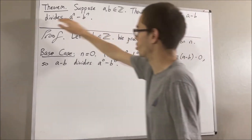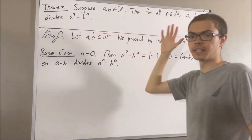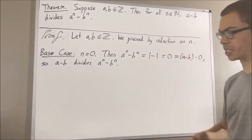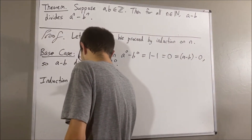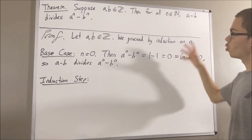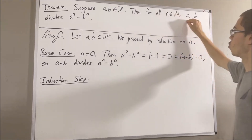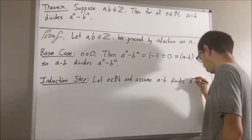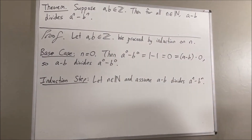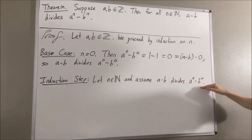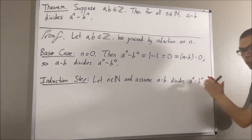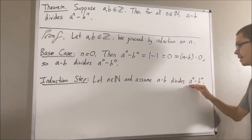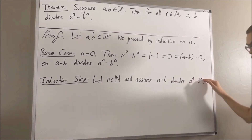We have shown that this is true in the case where n is equal to zero, so this completes the base case. Now let's move on to the induction step. In the induction step, we give ourselves an arbitrary natural number where this is true. The whole goal of the induction step is to show that this is true where instead of n, we have n plus one. So we want to show that A minus B divides A to the n plus one minus B to the n plus one.